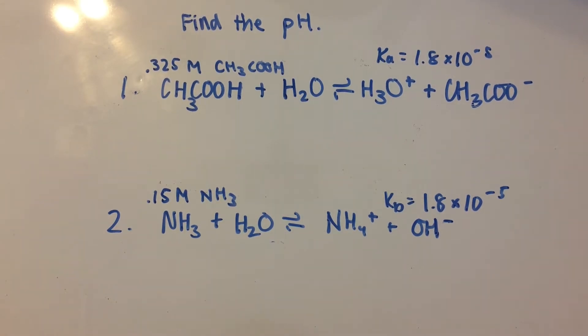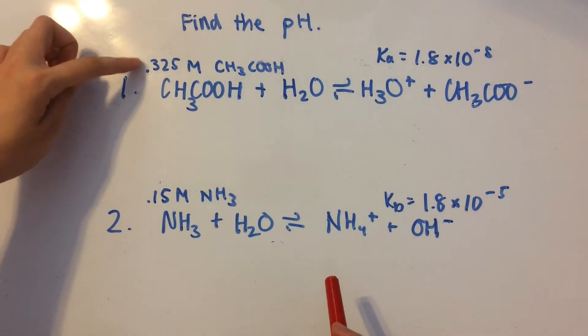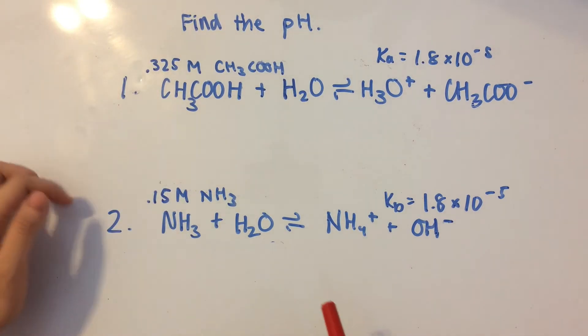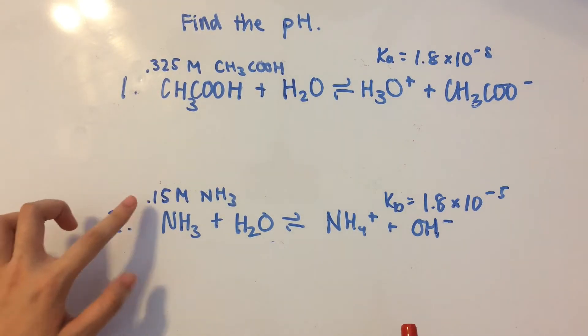So there's two things that we need to find the pH for. The first one of them is a weak acid, acetic acid, and the next one is going to be a weak base.